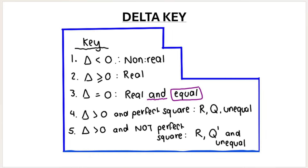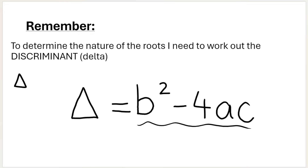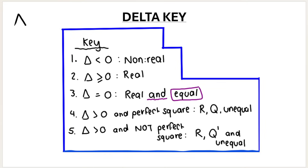If that value is less than zero, both of your roots are non-real immediately. So if you work out delta and you get an answer of negative whatever — negative three, negative four, negative one million — then your roots are non-real. If you get a delta value that is equal to or bigger than zero, your roots are real. If your discriminant is exactly zero, your roots are real and they are equal — both solutions are the same.